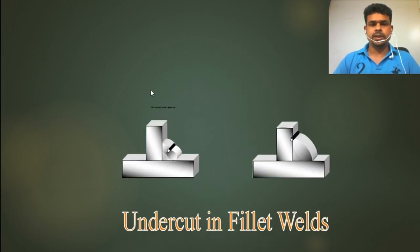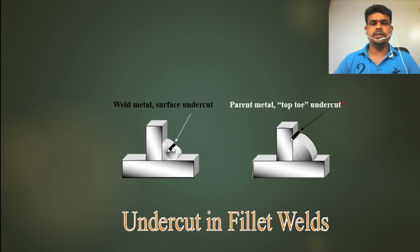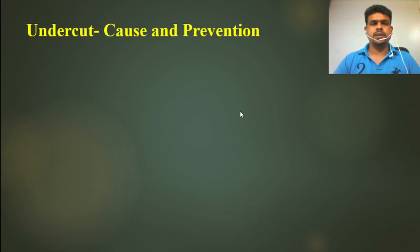You can see another figure here — this is also the weld metal surface undercut. From the current metal top down to this area is the undercut zone.